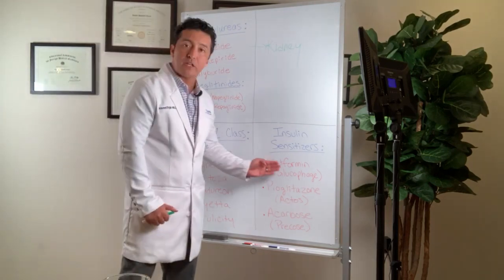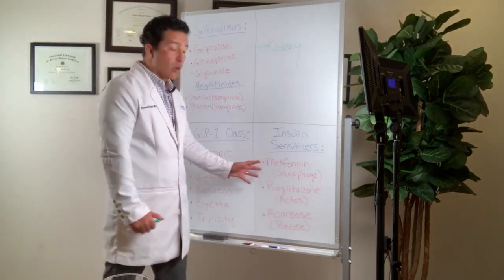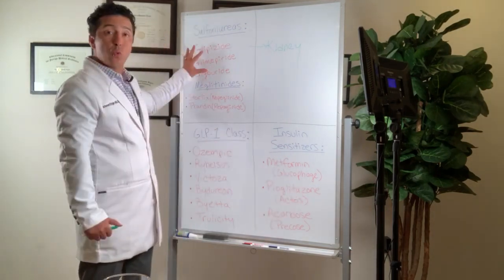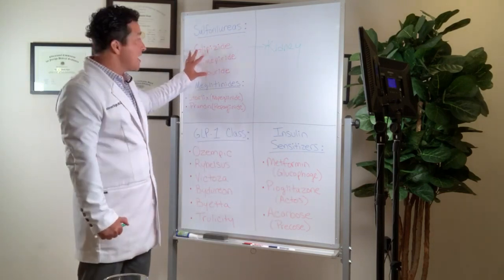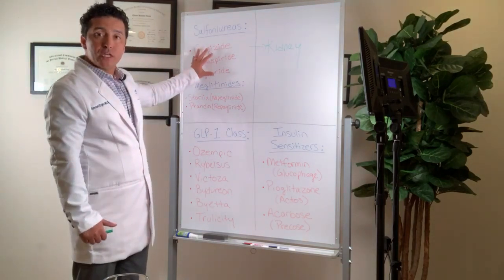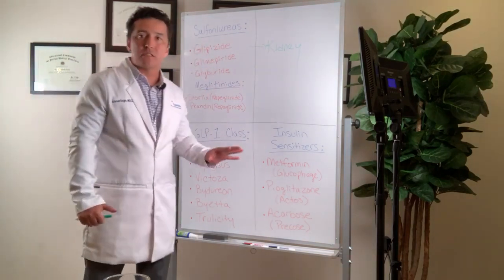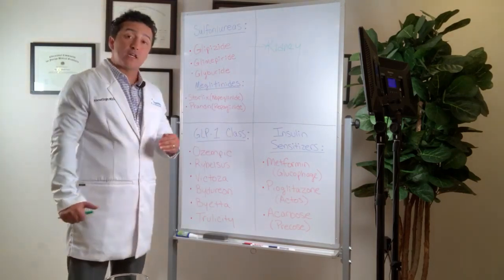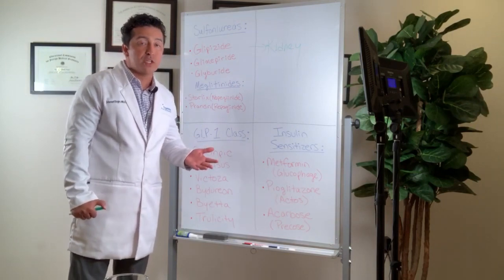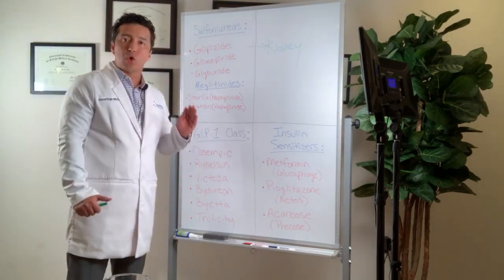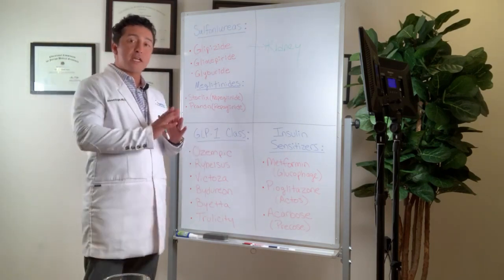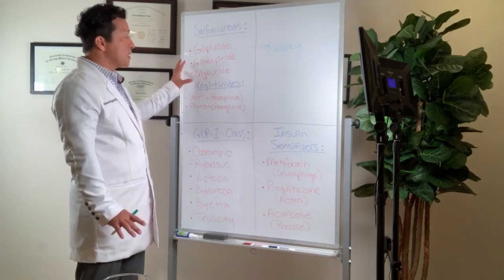But when they did studies comparing sulfonylureas with, for example, insulin sensitizers, metformin, or pioglitazone, when they compared sulfonylureas to these insulin sensitizers, patients who were taking sulfonylureas ended up needing insulin way faster. So that means that if you're on sulfonylureas, you may end up with insulin faster. Now, again, you may have been on sulfonylureas for 20 years, and you may say, hey, you know, I don't need insulin still, but I'm not talking about specific cases. We are talking about studies. We are talking about, you know, general population.